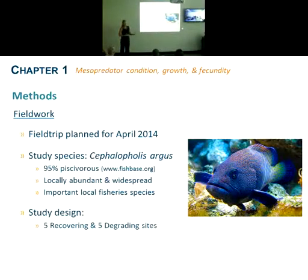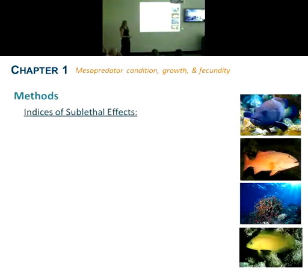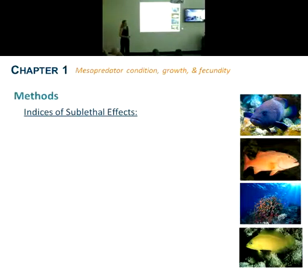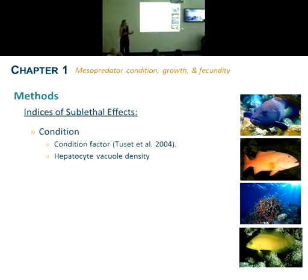The study design will entail five recovering and five degrading sites. At each of these, fish will be collected using a speargun, aiming to collect 10 to 20 adult fish of the species at each site. With all the individuals collected, I'll look at evidence for a number of sublethal effects using different indices. The first is condition of the fish — broadly using an overall condition factor to look at general robustness, then looking more closely at energy stores by examining fat vacuole density in their livers.